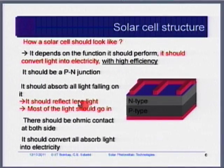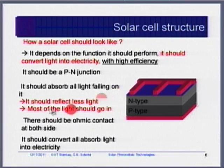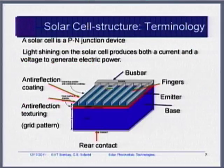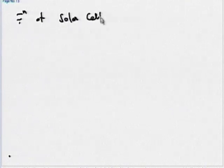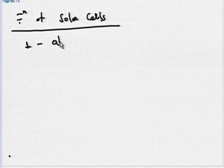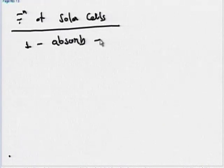A solar cell should perform the following functions. First, it should absorb as much light as possible and create electron-hole pairs. Second, once electron-hole pairs are created, they must be separated. If an electron-hole pair recombines, it doesn't contribute to current generation. We want the minority carrier to cross the junction — once it does, it cannot come back. This is called separation of carriers.